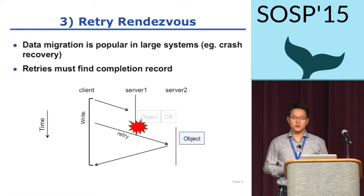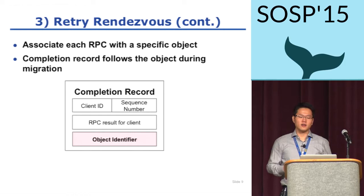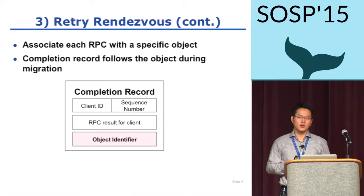From this example, we see that the completion record should also migrate as the data migrates. To migrate the completion record correctly, we associate each RPC to a specific object so that the underlying system can move the completion record with the object.